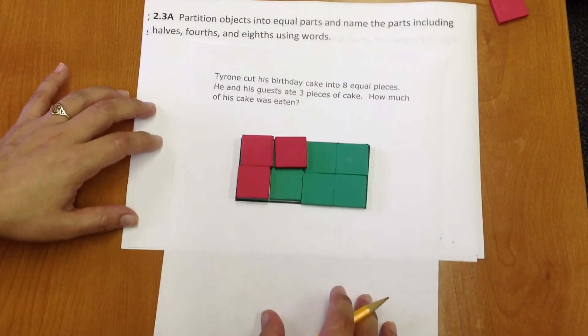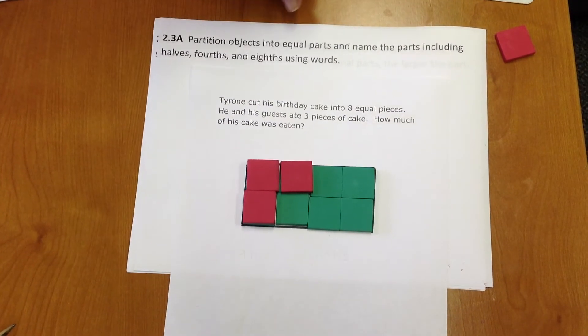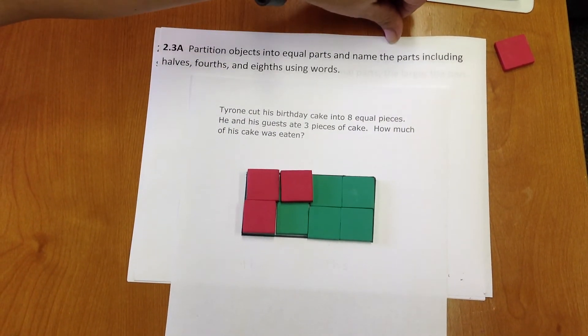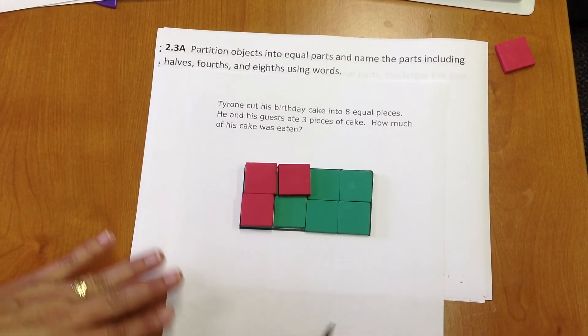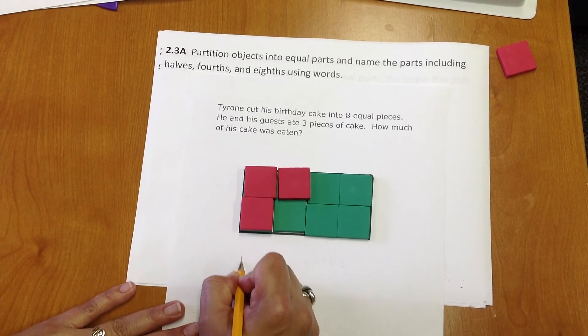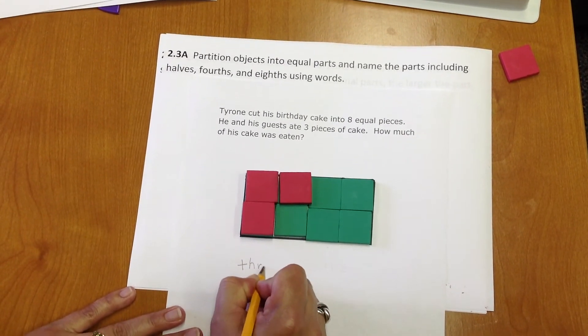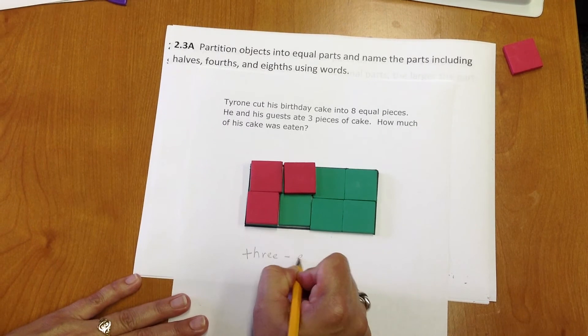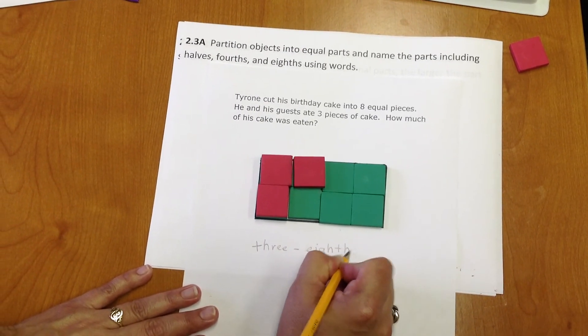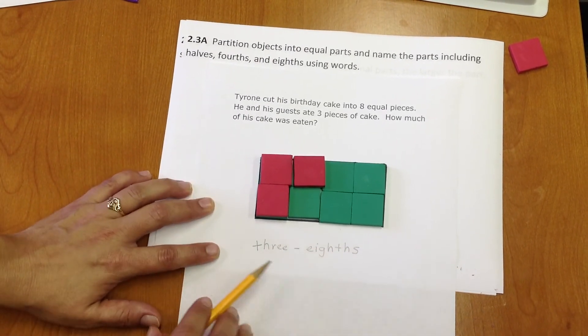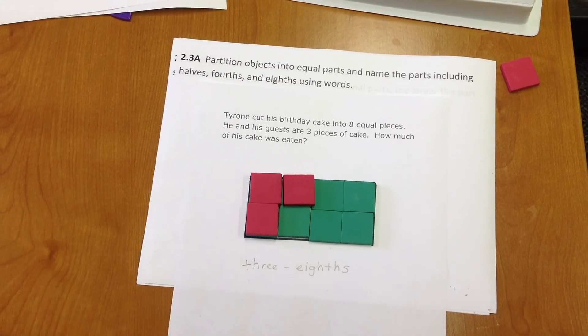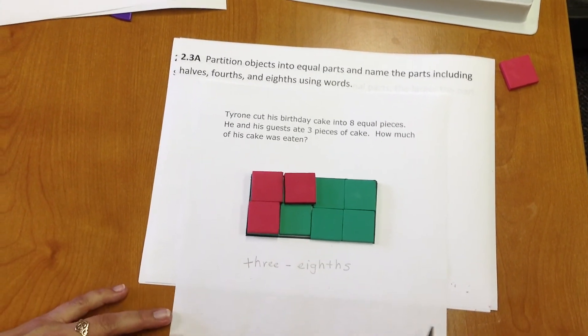I'm going to represent that. Going back to the standard, we need to name the parts. So as we just said, three-eighths have been eaten, which I'm going to write out here. Three-eighths of Tyrone's cake has been eaten.